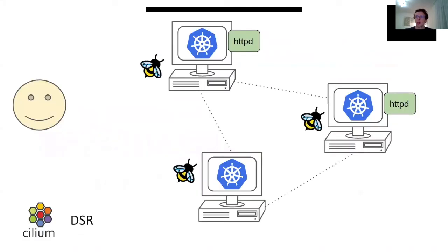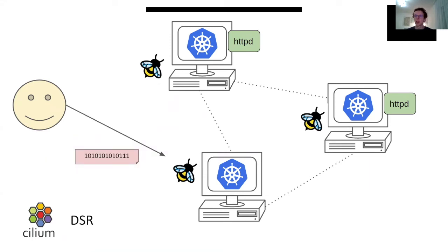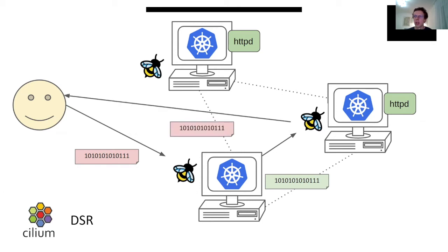eBPF is not only about speed. With eBPF, we can create custom data planes whose functionality is not restricted by the existing features of Linux networking. For example, in Cilium, we implemented direct server return with eBPF. When the intermediate node is about to forward the request to the destination node, it appends some metadata to the packet so that the destination node can send the reply directly to the client. This saves an extra hop and also preserves the client IP.